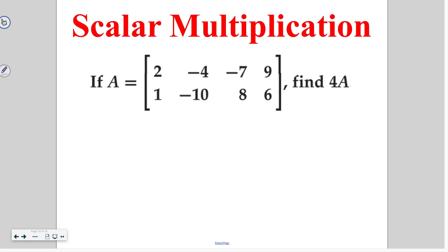So if A is 2, -4, -7, 9, 1, -10, 8, 6, we want to find 4A. So this four over here is our scalar. And what that means is I need to multiply each element in the matrix by a value of four.